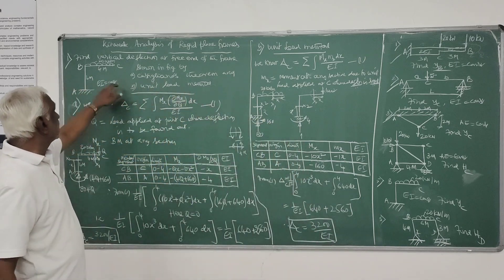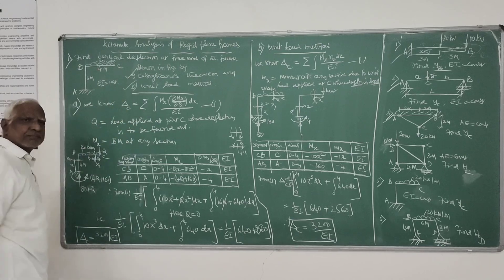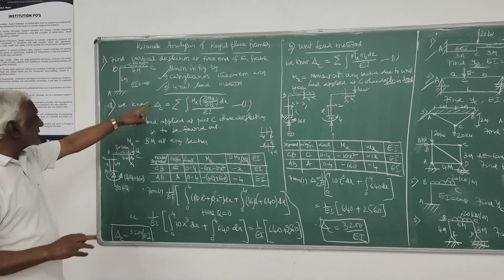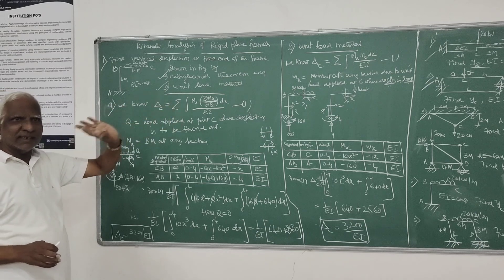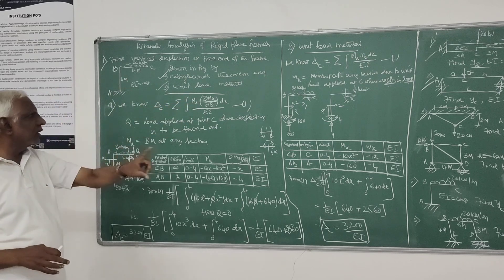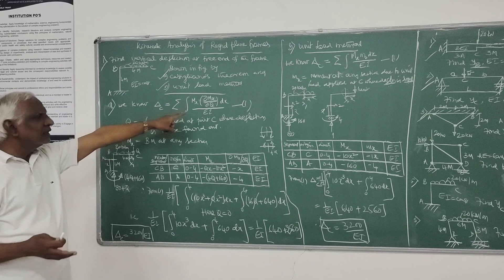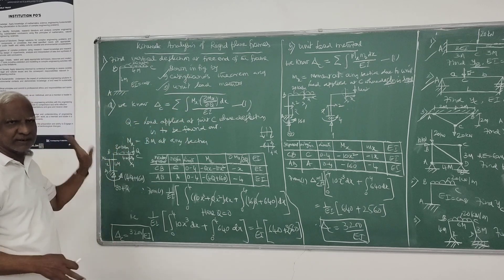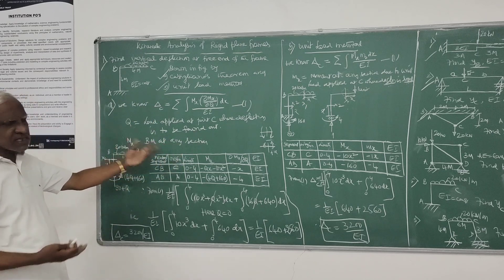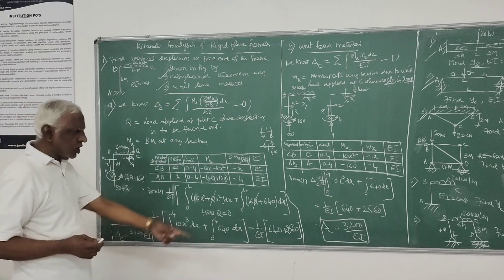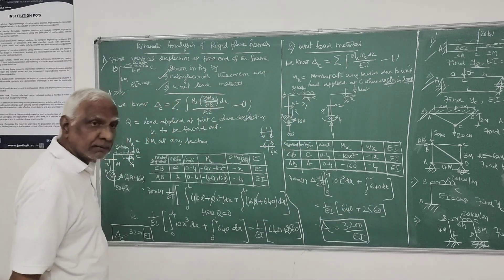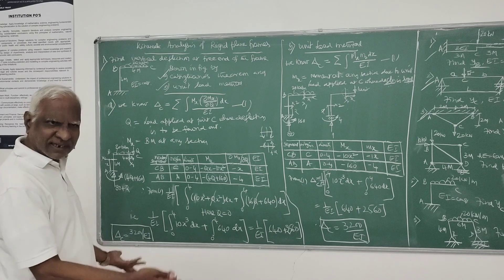So here you are getting same solutions for both Castigliano's and unit load method. Remember that formula. For trusses it is sigma PK delta L by AE. Here it is F into delta F by delta Q. Same expression. Now we can take another problem which is unsymmetrical.